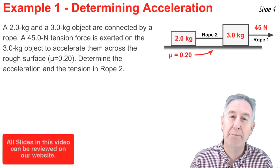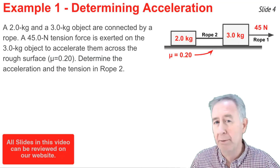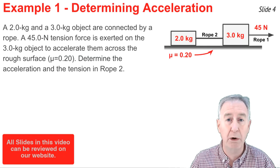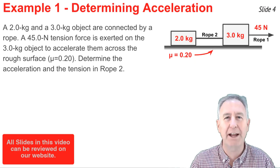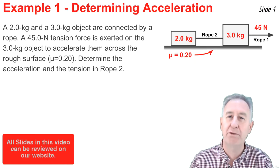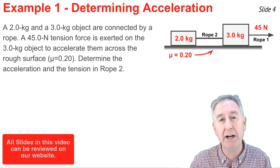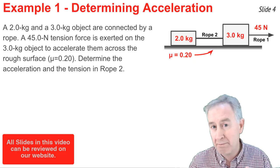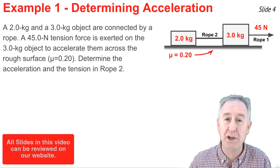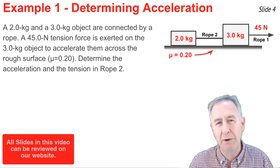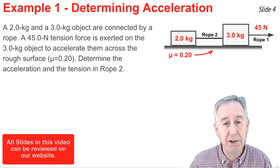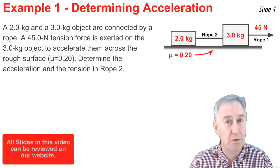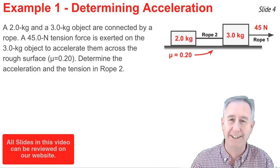Now I'm ready to use that two-step approach to solve this problem. A two kilogram and a three kilogram object are connected by a rope — that's rope two in the diagram. A 45 Newton tension force is applied to the three kilogram object to accelerate both objects across a rough surface with a coefficient of friction of 0.20. I want to determine the acceleration of the objects and the tension force in rope two, the rope connecting the objects.